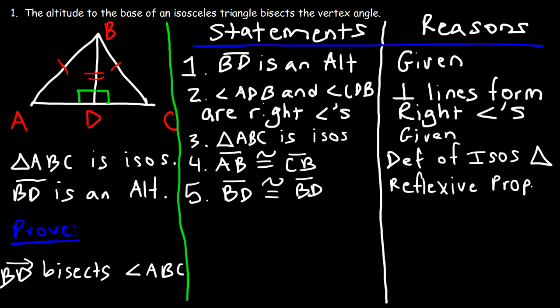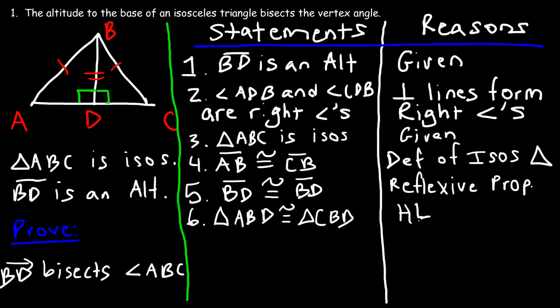Now we have enough information to prove the two triangles congruent. We can say that triangle ABD is congruent to triangle CBD. The postulate we use as the reason is the HL postulate — the hypotenuse-leg postulate.